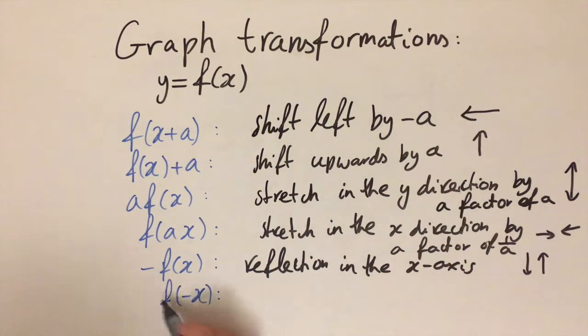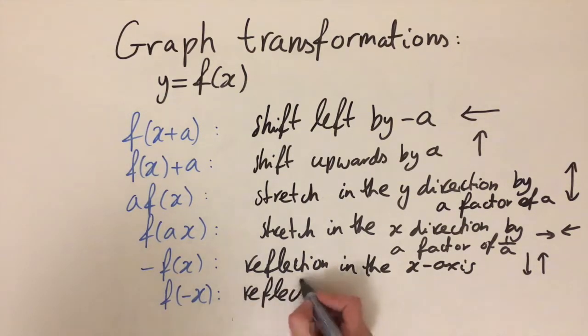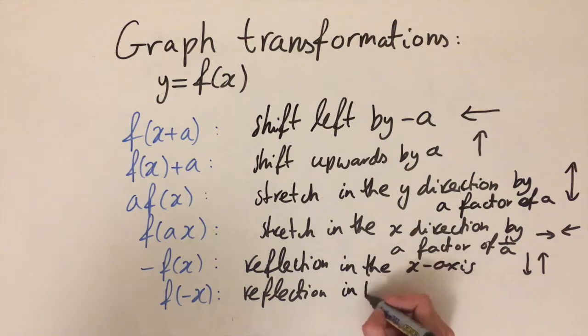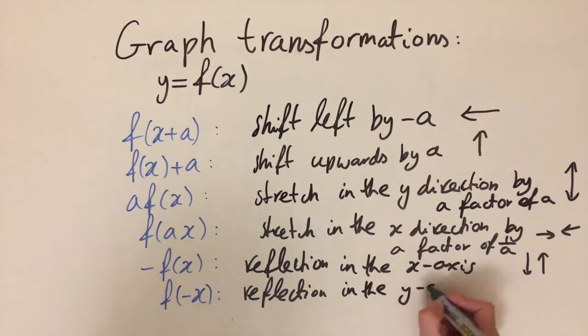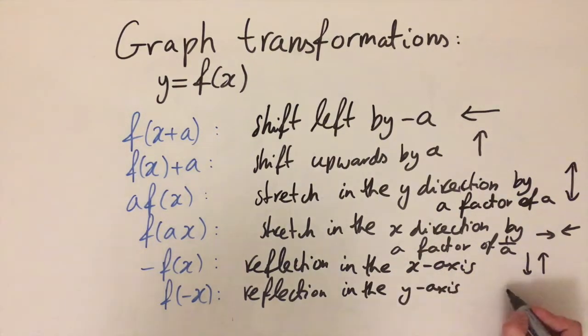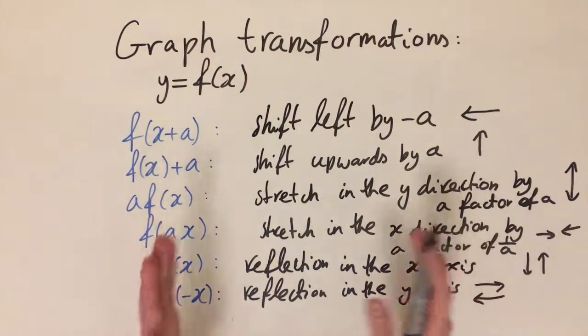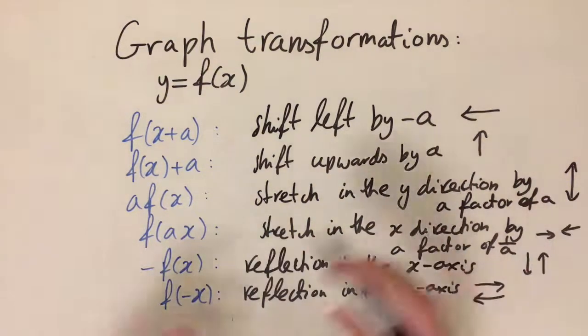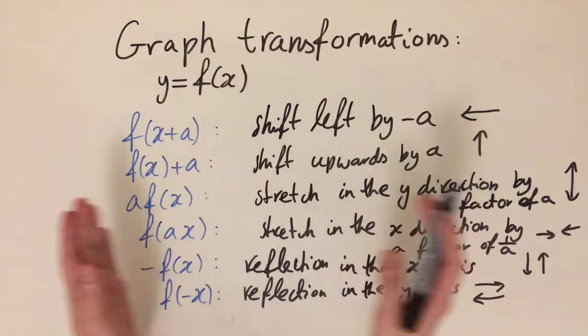And now if instead we have the negative sign inside the brackets, f(-x), this is also going to be a reflection but in the y direction—reflected across the y-axis. So a reflection in the y-axis means we are now switching everything on the left to the right and the right to the left. If our function looks generic, we are switching the left-hand side with the right-hand side.